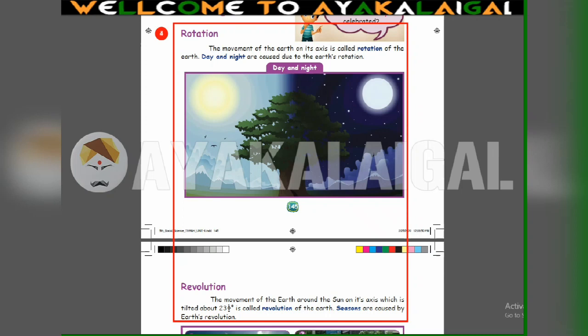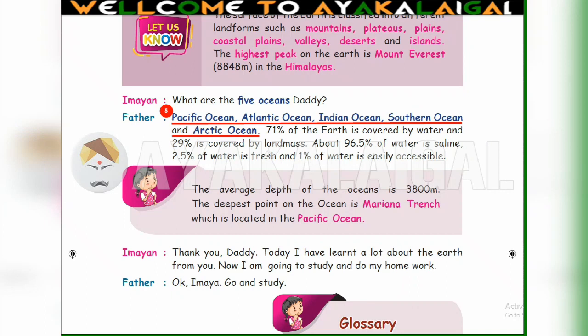5th question: How many oceans are there on the earth? Page number 149. There are 5 oceans on the earth. They are: Pacific Ocean, Atlantic Ocean, Indian Ocean, Southern Ocean, and Arctic Ocean.